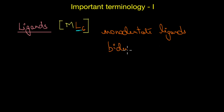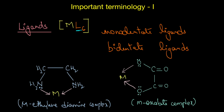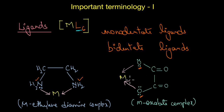Bidentate ligands — also sometimes called didentate ligands — include ethylenediamine (NH2CH2CH2NH2) and oxalate ions. Ethylenediamine has two nitrogen donor atoms and oxalate has two electron-rich oxygen atoms, both of which can donate an electron pair to the electron-deficient metal atom. Such ligands that bind through two donor atoms are called bidentate ligands.